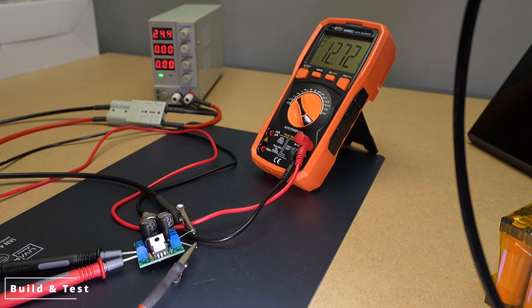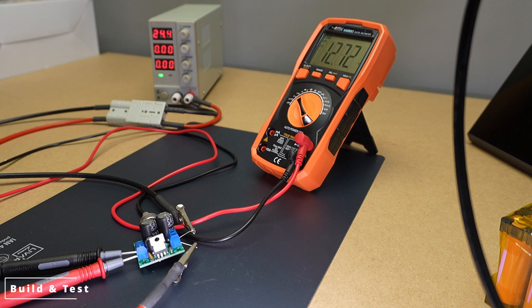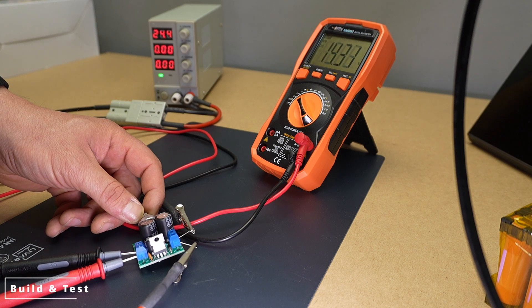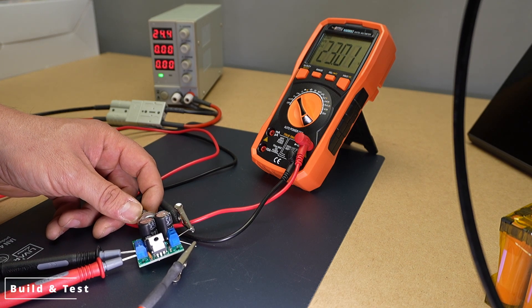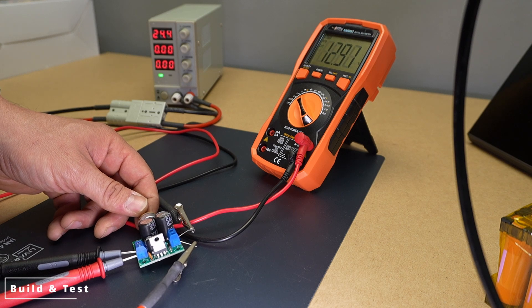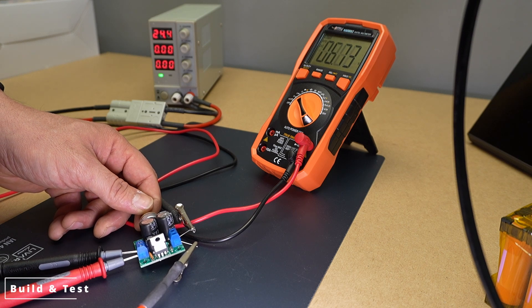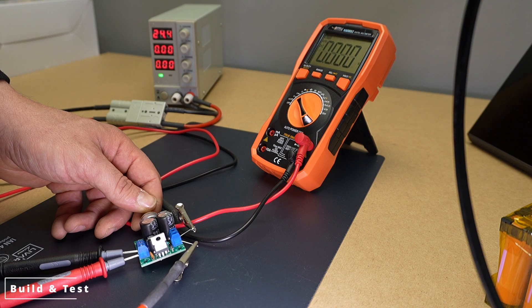Troubleshooting tips. If any irregularities occur during the test, such as no output voltage or excessive current consumption, consider rechecking. The quality of the solder joints. Look for cold joints. The polarity and type of the components. Whether there are any shorts on the printed circuit board.